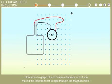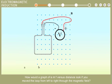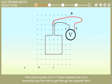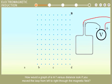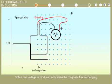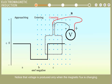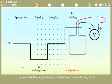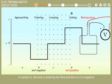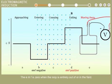How would a graph of EMF versus distance look if you move the loop from left to right through the magnetic field? Notice that voltage is produced only when the magnetic flux is changing. In section B, the loop is entering the field and the EMF is positive. In section D, the loop is exiting the field and the EMF is negative. The EMF is zero when the loop is entirely out of or entirely within the field.